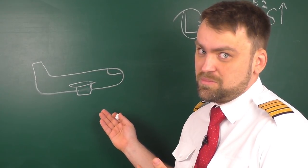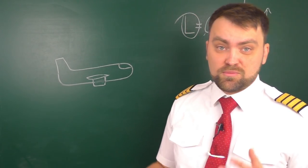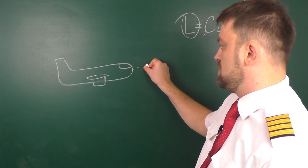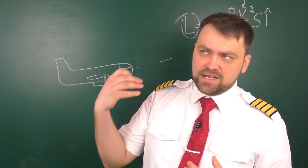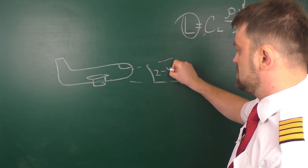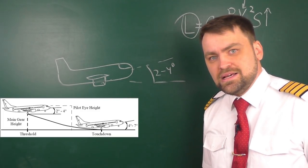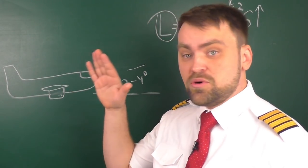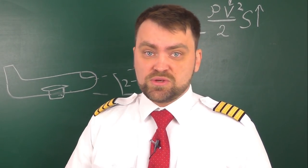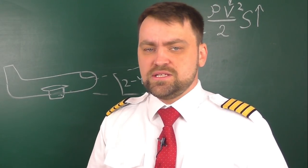For the typical airspeed and standard flap setting on the Boeing 737, the pitch of the airplane is never negative. Depending on the modification — 800, 900, 600, 700 — and the flap setting, it's usually between two and four degrees, as shown in the flight crew training manual. It is a great thing to have positive pitch on the Boeing 737, and on most jet airplanes.